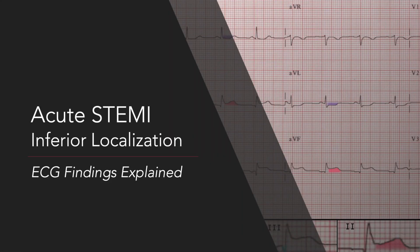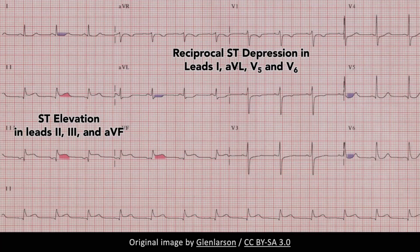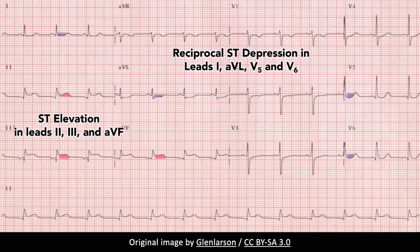This lecture will describe the classic ECG findings associated with an inferior ST elevation myocardial infarction. An acute inferior STEMI characteristically results in ST elevation in the inferior leads and reciprocal ST depression in the frontal and sometimes lateral precordial leads.